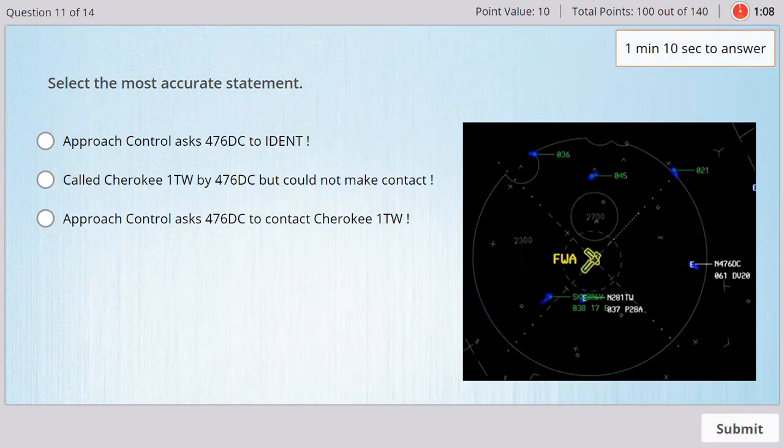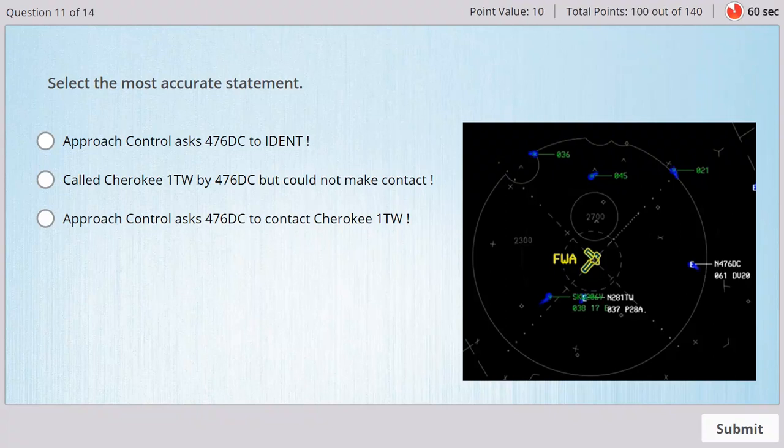Cherokee, one tango whiskey, Fort Wayne approach. 476 Delta Charlie, Fort Wayne approach. Do you read this transmission? Yes, sir. I hear you loud and clear. 476 Delta Charlie. 476 Delta Charlie. Can you try to reach out to Cherokee one Tango Whiskey and see if they'll respond to you? Sure thing. Cherokee, what was that call number? Was it one Tango X-ray? One Tango Whiskey. One Tango Whiskey. This is 476 Delta Charlie. Do you copy?